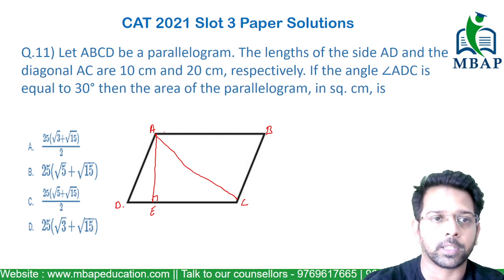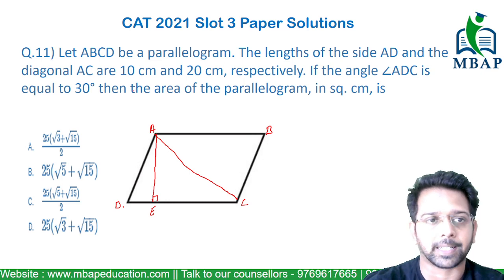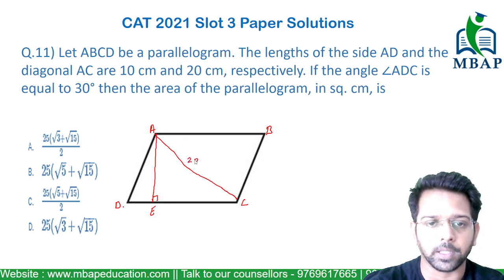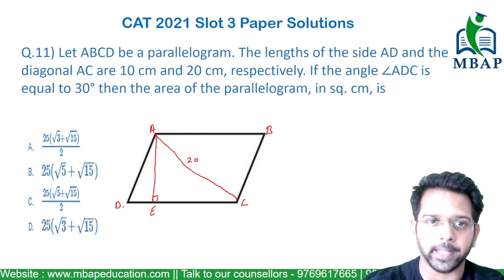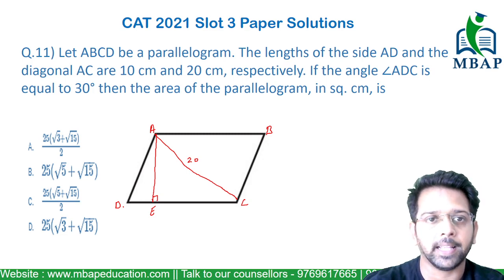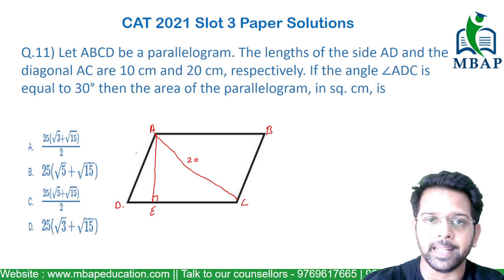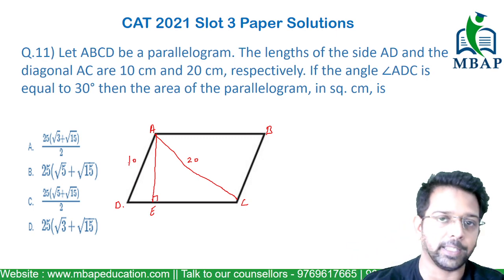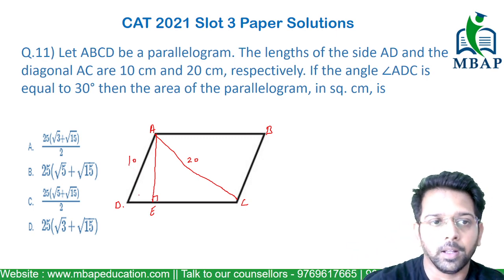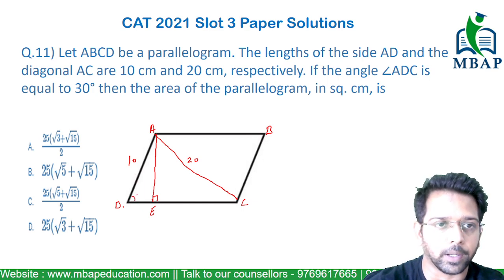Now let's see what all things have been given to us. The diagonal AC's length has been given as 20. The side AD has also been given as 10 cm. The angle ADC is given as 30 degrees.